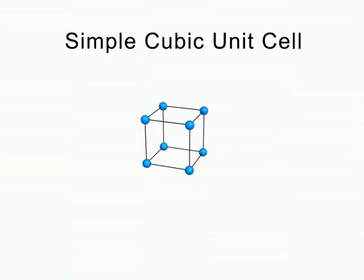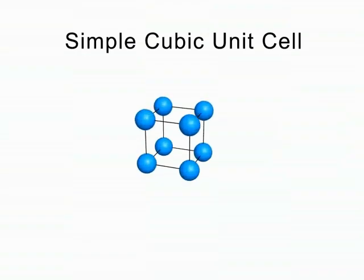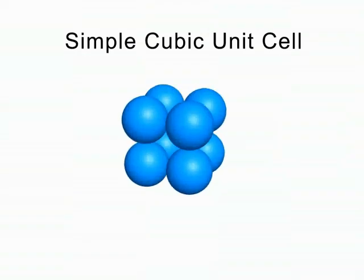All cubic unit cells have particles at the corners of a cube. The simple or primitive cubic unit cell has particles at the corners only. In reality, the particles lie as close to each other as possible.